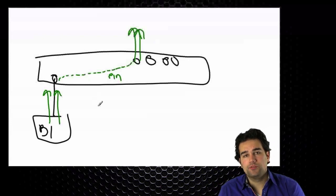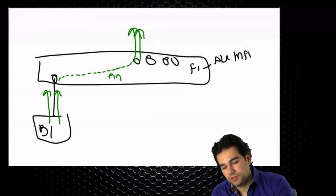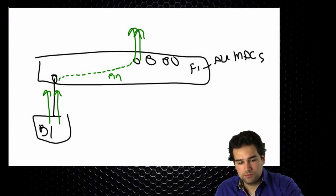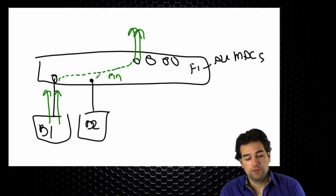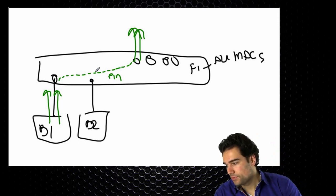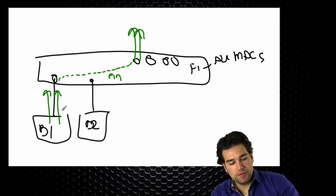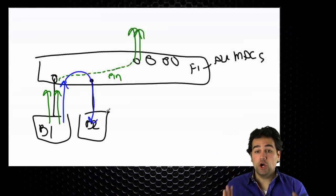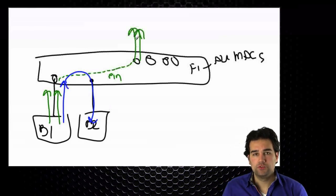Except for traffic destined for local destinations. The fabric interconnect is aware of all MAC addresses in the system. So if blade one sends a packet for blade two, the blade two MAC address is known on the fabric interconnect. When I see a packet going towards a destination MAC also connected to my system, I switch that locally. For uplink traffic — all other traffic — I pin statically to a single uplink.